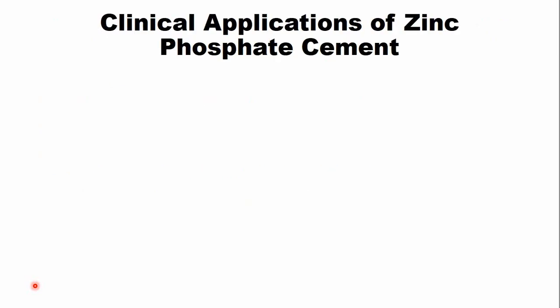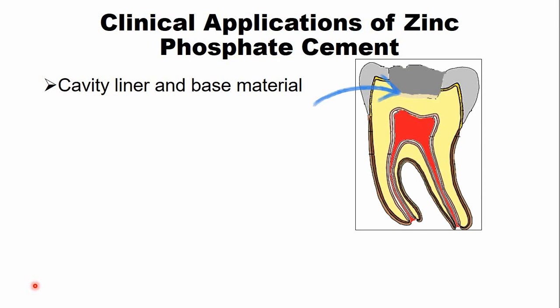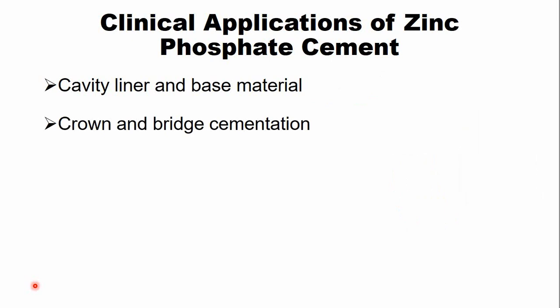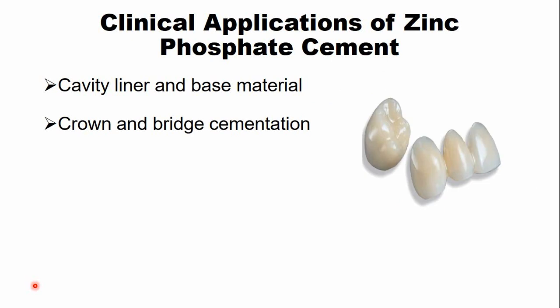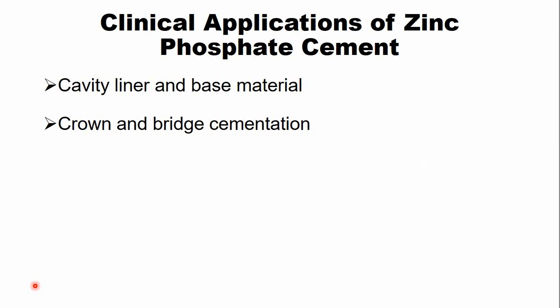The clinical applications of zinc phosphate dental cement: due to its low thermal conductivity, this cement is used as a cavity liner and base under metallic restorations. It is also used for crown and bridge cementation, though newer materials with better mechanical and aesthetic properties — such as glass ionomer cement and resin-based cements — are now preferred for crown and bridge cementation.